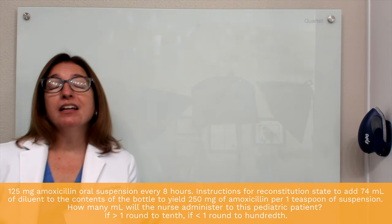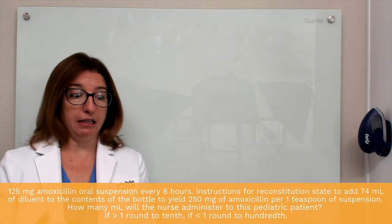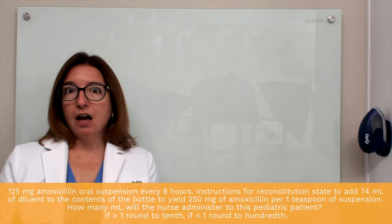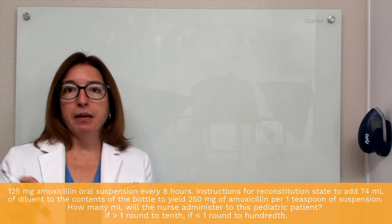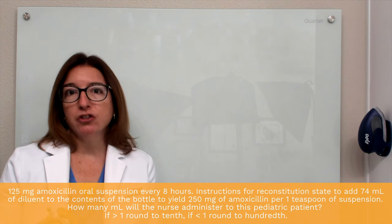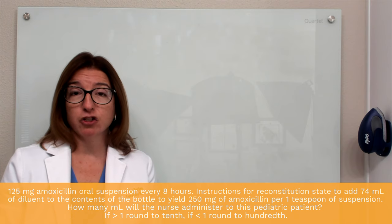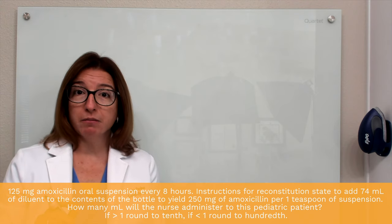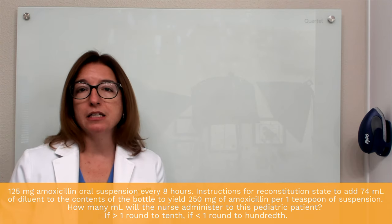When you're given a reconstitution problem, they like to throw a lot of numbers at you. You may look at this and be like — 125 milligrams, 74 milliliters, 250 milligrams — it's a lot. The bottom line though, if they are asking you for the dose, the amount to give a patient, you only really care about the final concentration of the solution. We don't really care that 74 milliliters of water was added. The only numbers we care about are that 125 milligrams are ordered, and the final concentration is 250 milligrams in one teaspoon of suspension.